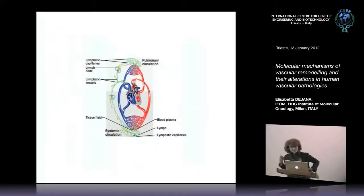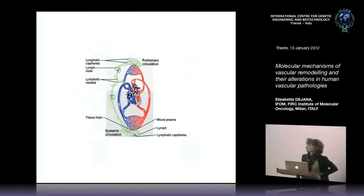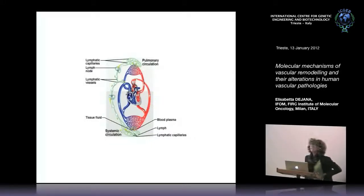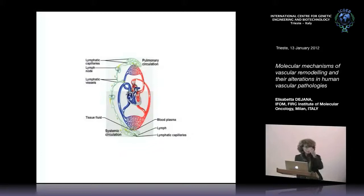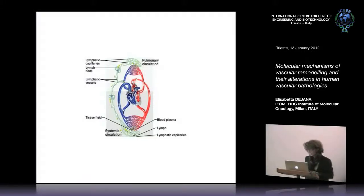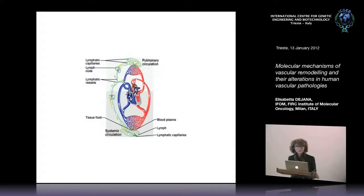One key question was whether junctions change along the vascular tree. Since they are important for cell signaling and modulation of permeability, we would expect differences comparing, for instance, post-capillary venules or lymphatics. Lymphatics are a particular vascular system with very dynamic interchange between lymphocytes, dendritic cells, and lymph. We started work in collaboration with a group in San Francisco — Donald McDonald — to first visualize junctional organization in vivo and see any differences comparing different types of vasculature.